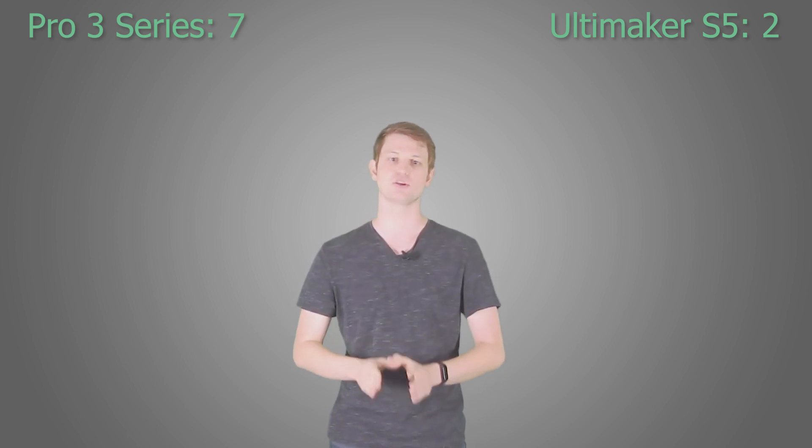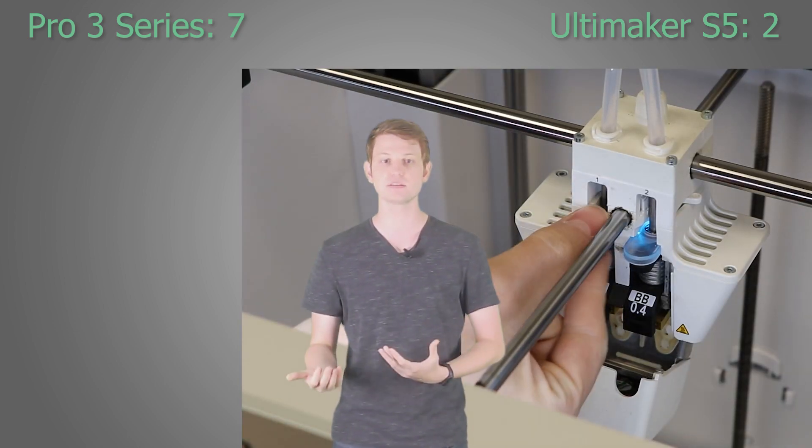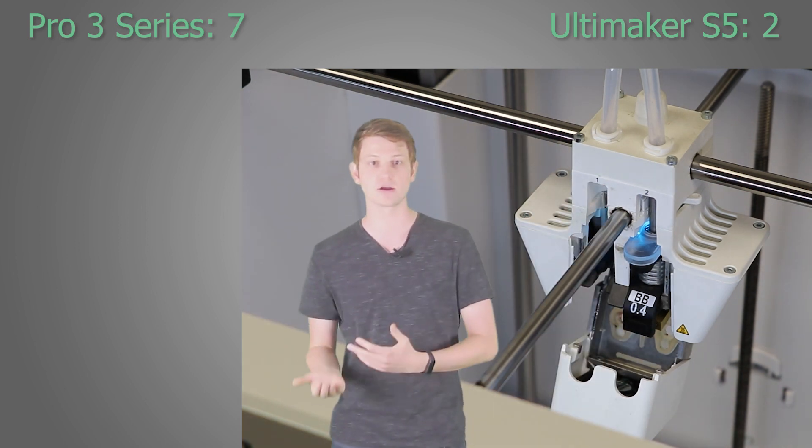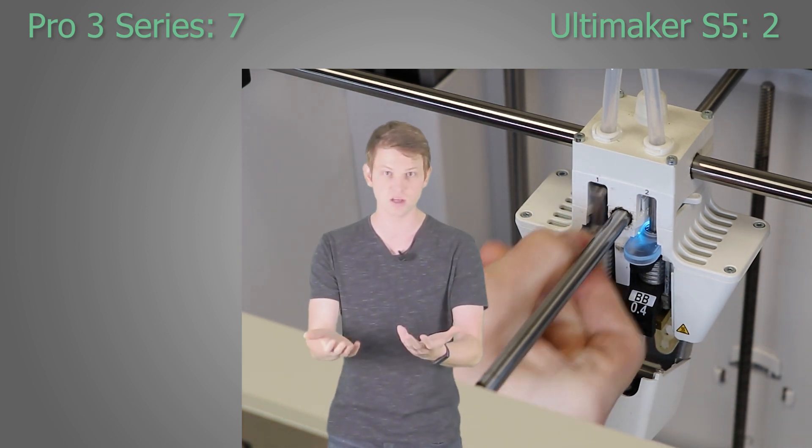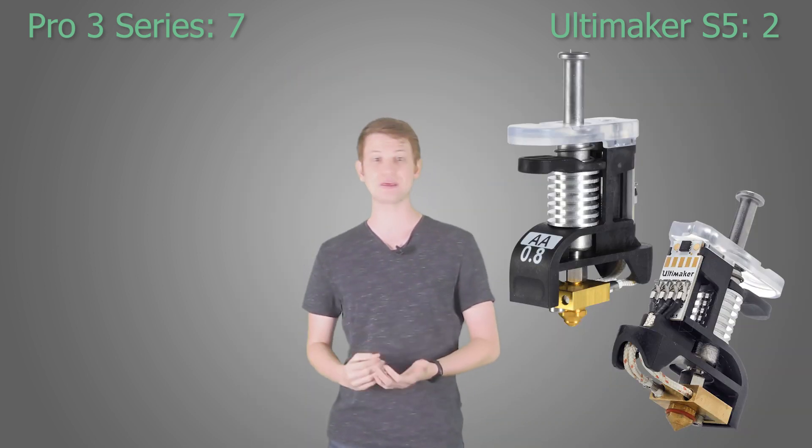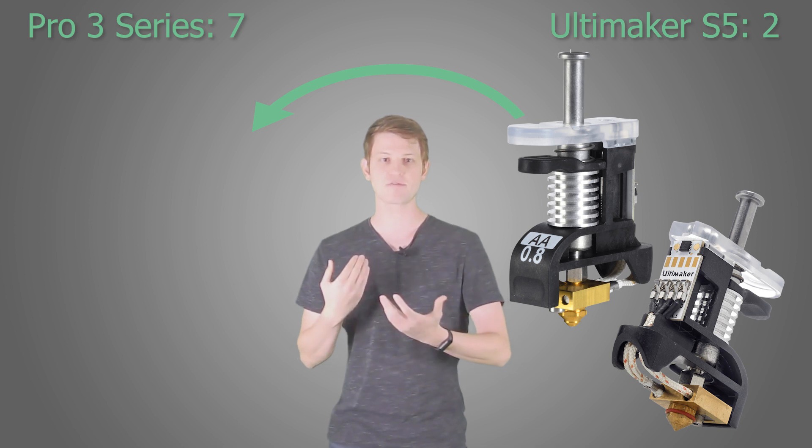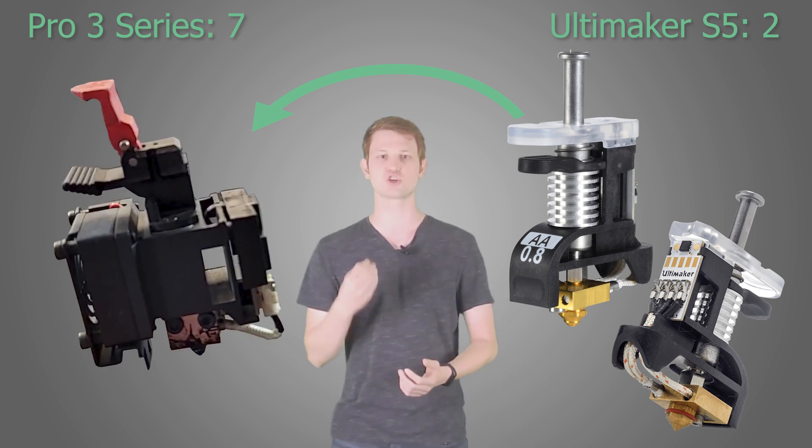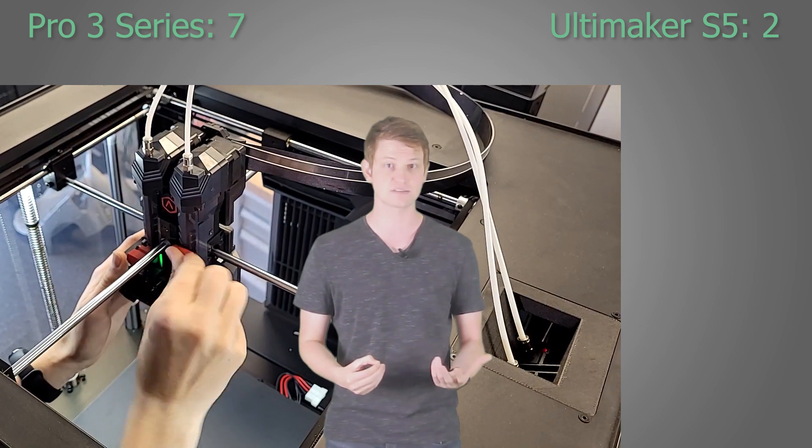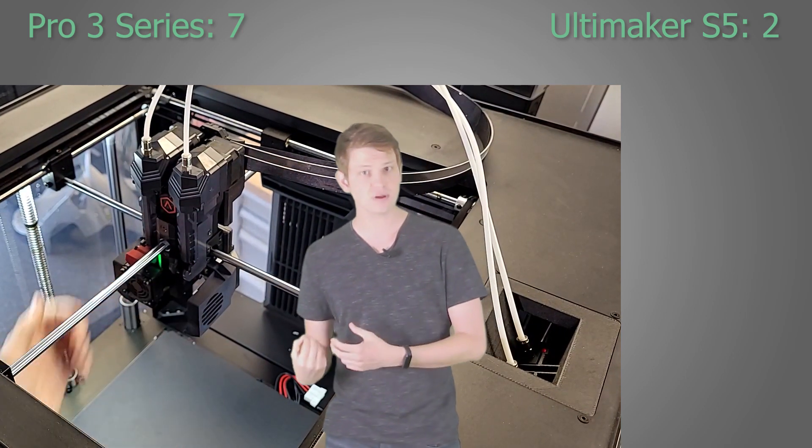One of the big benefits the S5 has always had was the print core system it used. It allows for quick and easy swapping of nozzles depending on the required diameter or nozzle type required, whether it be brass, steel or ruby tipped nozzles. But with the Pro 3 series, Race 3D have copied Ultimaker's homework. They now have their own exchangeable hotend system, allowing for just as easy and quick removal and mounting as the S5. In addition, the nozzles on the Pro 3's hotends can actually be changed, unlike those of the Ultimaker print cores. However, as the prices for the Pro 3 hotends have not yet been announced, it is difficult to evaluate which solution ends up being more cost efficient in the long run. So once again, we'll just call this one a tie.